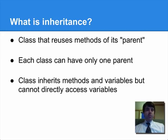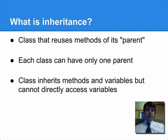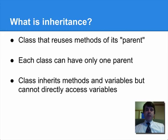Here are a couple of other restrictions you need to understand. Unlike interfaces, every class can have only one parent that it inherits from, in Java at least, whereas you can implement multiple interfaces. And the big difference for inheritance — this is really important — is that a child class can freely use the methods of its parent, but it can't touch the variables of its parent. In order to do that, you have to use a method in the parent class, either an accessor method or a mutator method.